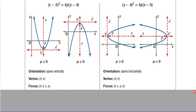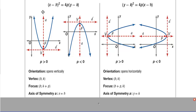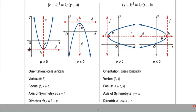The focus is a distance of p from the vertex. A positive p is above or to the right of the vertex, and a negative p is below or to the left. The axis of symmetry cuts the graph in half — it's x equals something for a vertical parabola, and y equals something for a horizontal parabola. The directrix is a line on the opposite side of the vertex as the focus.